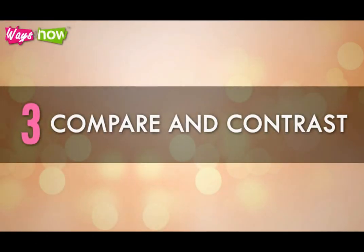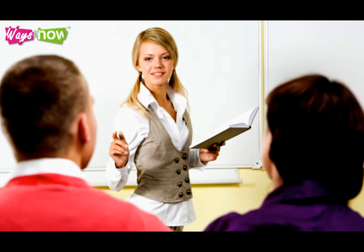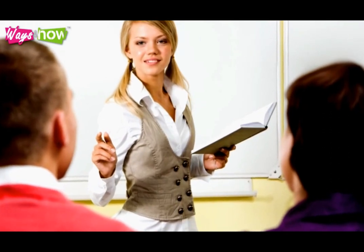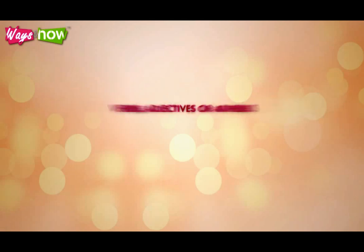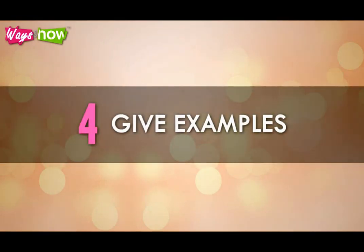Three: Compare and contrast. One good way of explaining what a noun is, is by explaining what it is not and by showing how it is different from other parts of speech, such as verbs, adjectives, or adverbs.